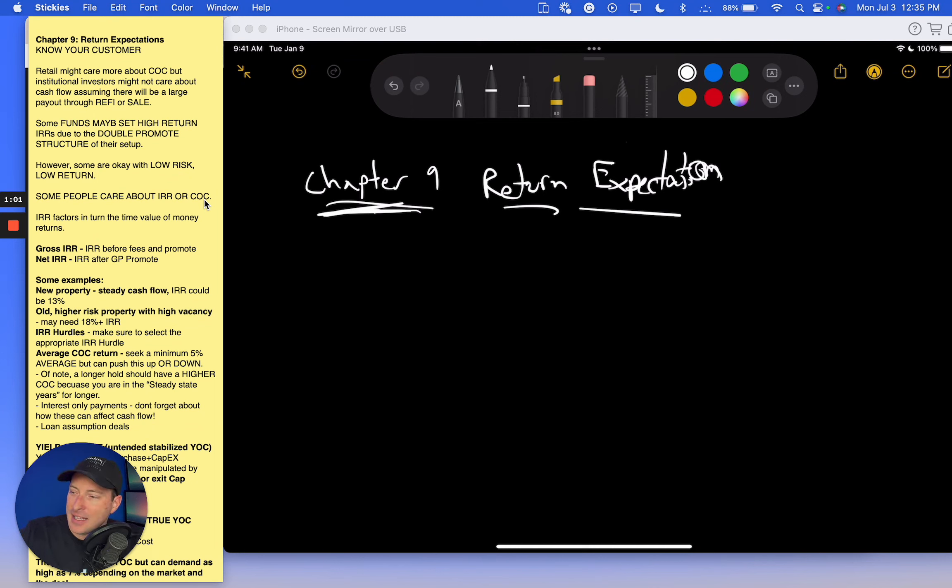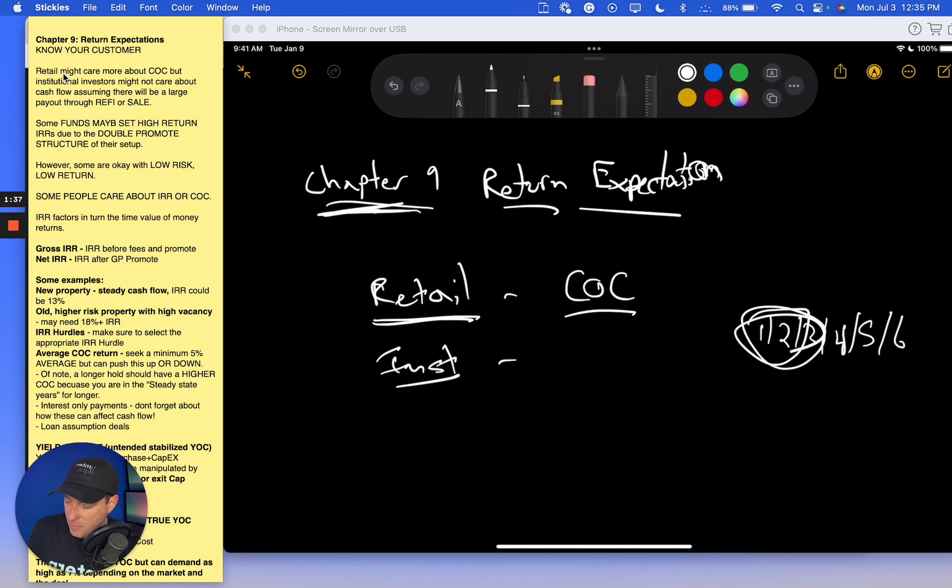Here, Rob talks about a lot of the mantra, knowing your customer, right? And this is basically getting at the investor and the LP and what do different LPs want. Different LPs want different things. Some folks, a retail investor, might care more about cash on cash return. And a big institutional investor might not really care if it's a big value-add deal.